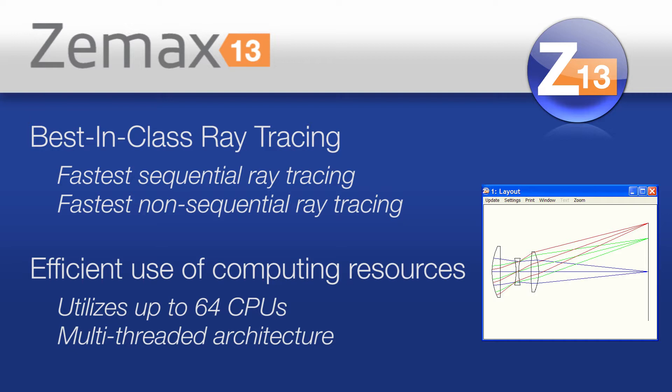These days buying an eight-core machine is relatively straightforward from almost any high street store. We support up to 64 cores for serious workstations. Moving on from that, we go into optimization and ZMAX lets you define as many variables for optimization as you want.